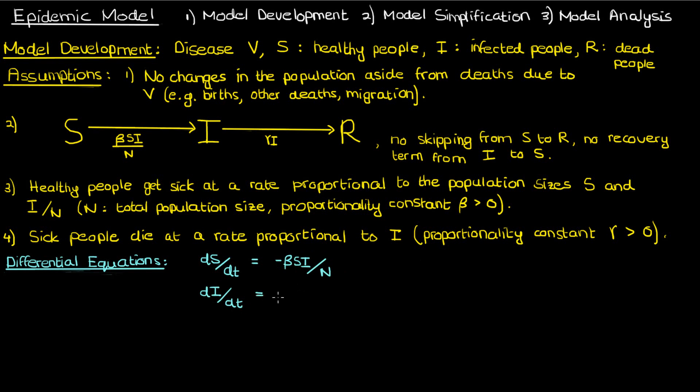The rate of change of sick people is the rate at which people are getting sick, which is now positive beta SI over N, minus the rate at which people are dying, which is gamma I. Finally the rate of change of dead people is a constant increase of gamma I.